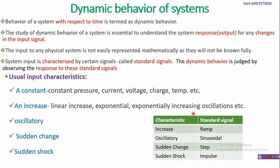All these characteristics are implemented by means of standard signals. This table shows which characteristic corresponds to which standard signal. An increase is represented by a ramp signal; oscillations are represented by a sinusoidal signal; a sudden change in level is represented by a step signal; and a sudden shock — a large change occurring within a very short time — is represented by an impulse signal. These are the standard signals used to study the dynamic behavior of a system.